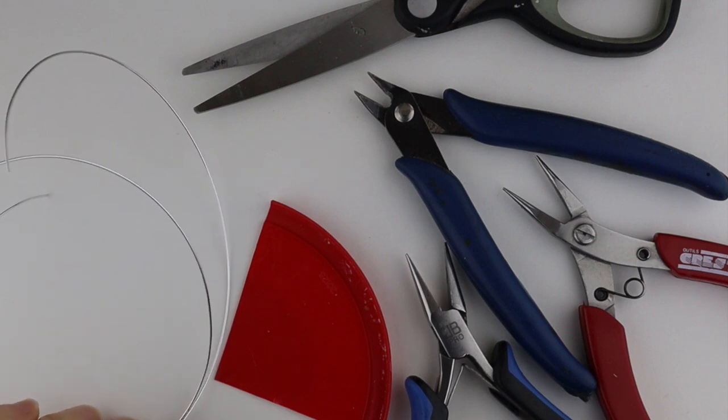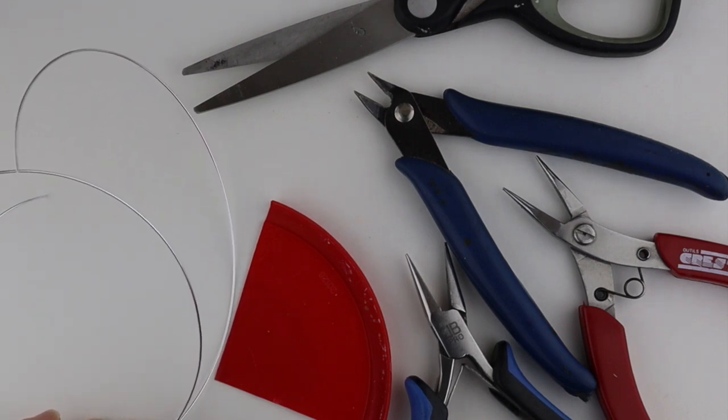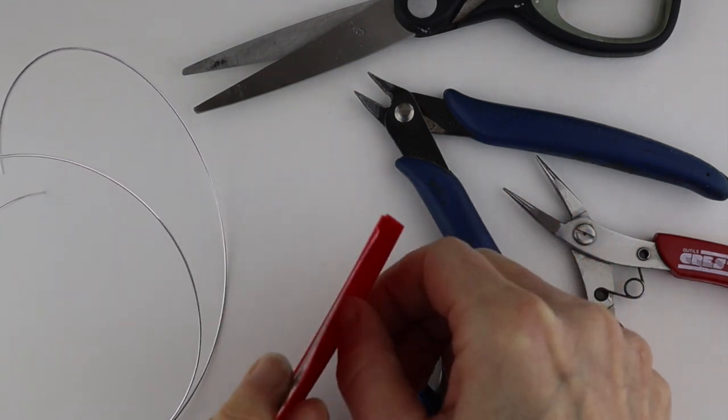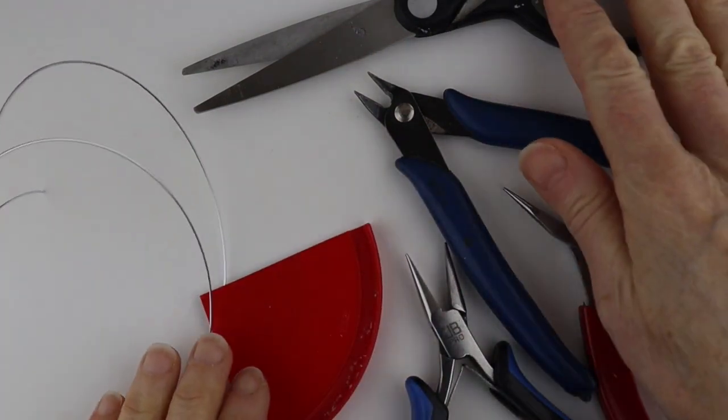You'll need a couple of pieces of wire around 20 gauge or 22 gauge. I'm using aluminum wire—it's just easier to bend. You're actually going to need a yogurt lid or some kind of plastic like that, your tools, and some scissors.